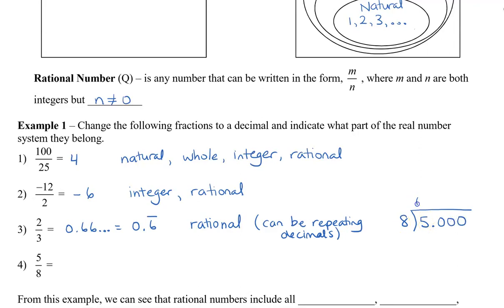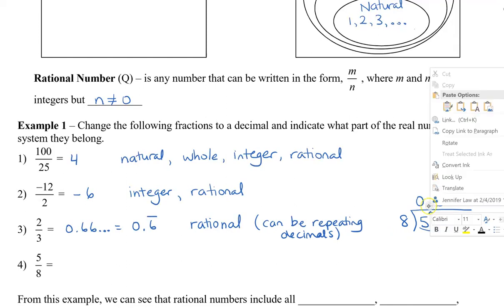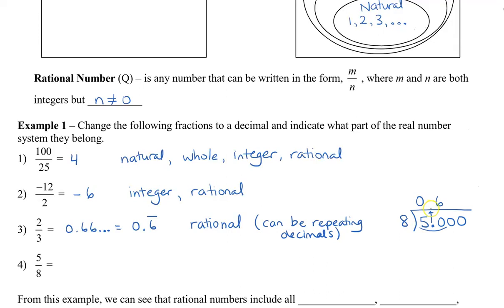So 8 doesn't go into 5. We'll place 0 on the top. So now we're going to check how many times 8 goes into 50. So 8 goes into 50, 6 times. Now notice that my decimal is here. So I'm going to bring that up and place the decimal here. And then we have 6. We're going to multiply that by 8, which is 48. We write that underneath the 50, and we're going to subtract. And then we get 2.